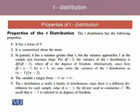The fourth property says that the variable T ranges from minus infinity to plus infinity. The T-distribution is really a family of distributions since there is a different distribution for each sample value of n minus 1, the divisor used in computing S squared. We recall that n minus 1 is referred to as degrees of freedom for T-distribution.